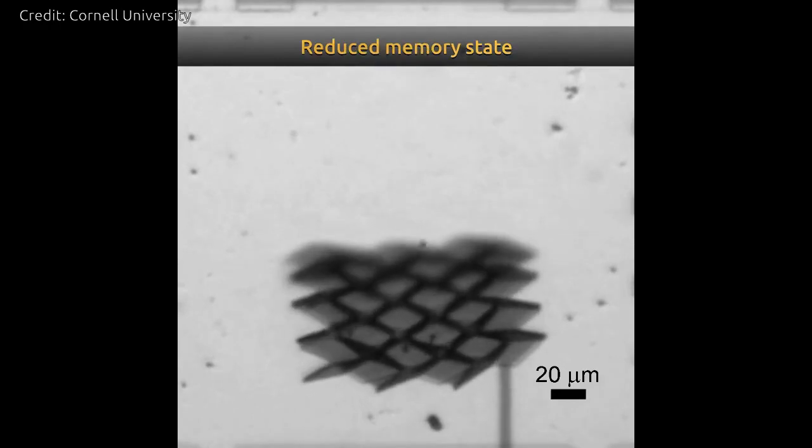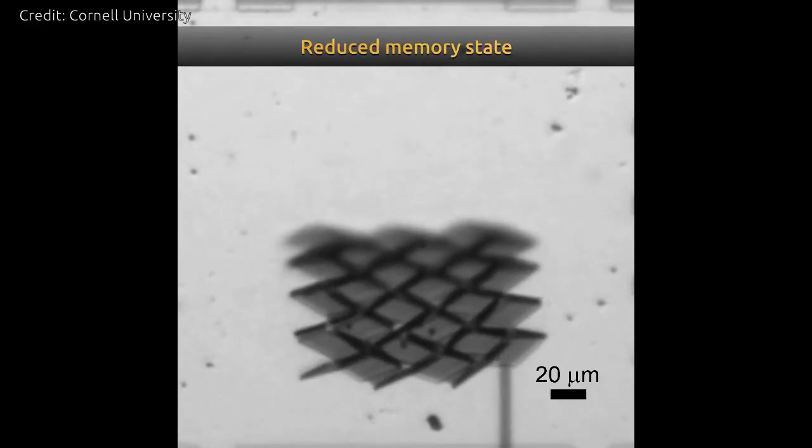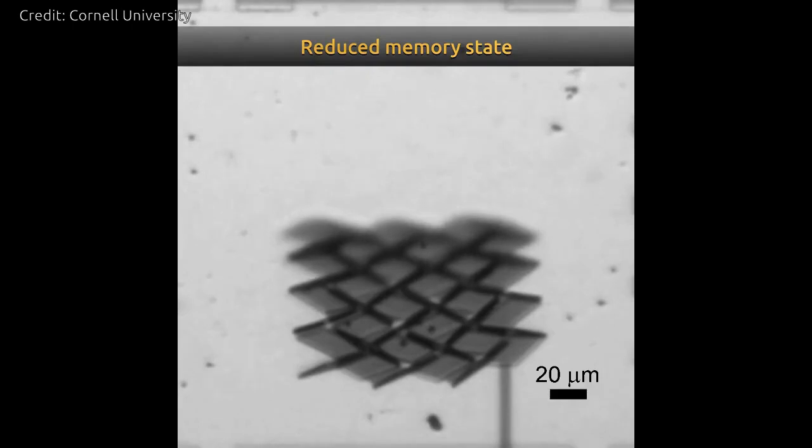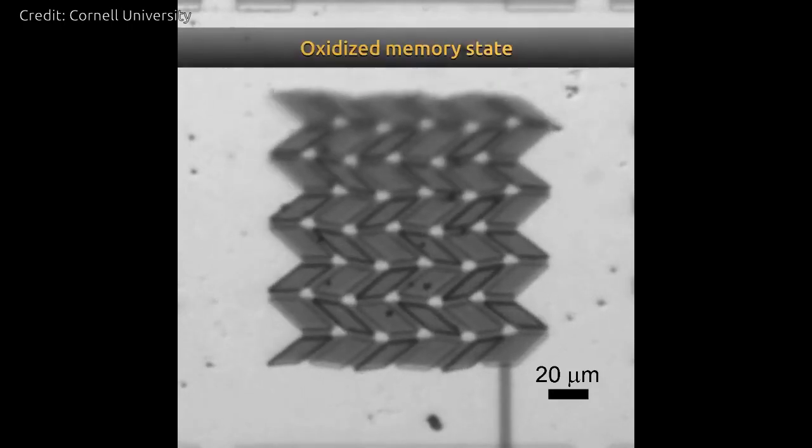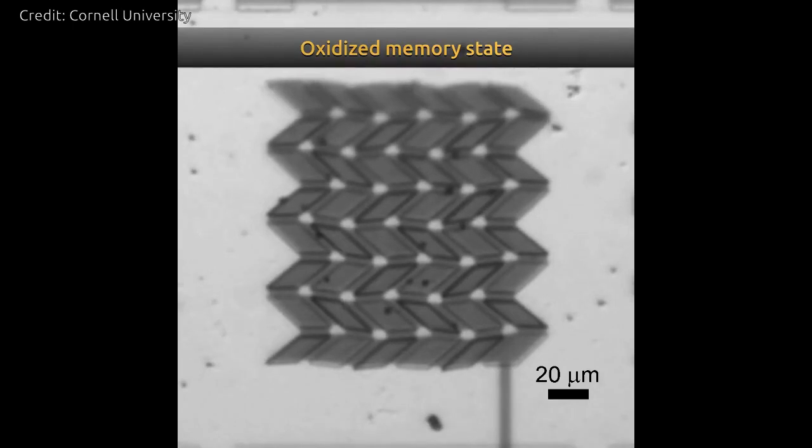By applying a negative voltage to the device, the researchers can remove the oxygen atoms and quickly restore the platinum to its pristine state. And by varying the pattern of the glass panels and whether the platinum is exposed on the top or bottom, they can create a range of origami structures actuated by mountain and valley folds.